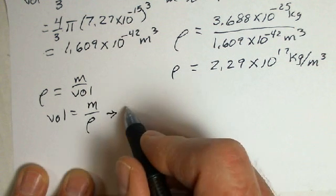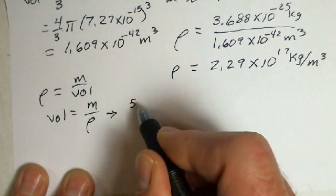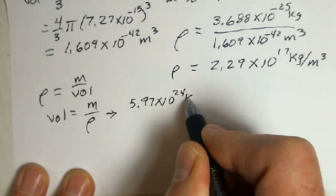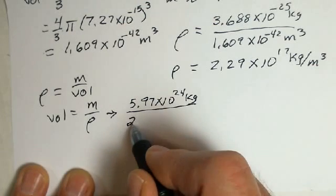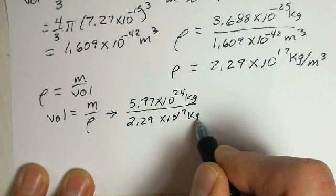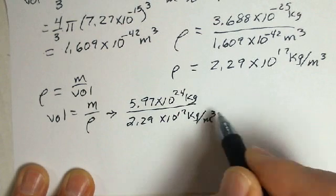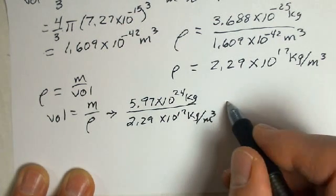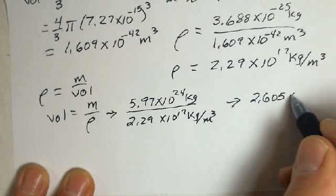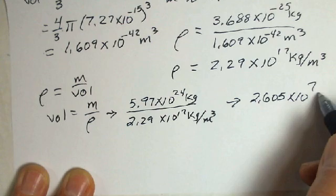And you can look up the mass of the Earth. 5.97, 10 to the 24th kilograms. And now let's use this density number. 2.29 times 10 to the 17th kilograms per cubic meter. And we come up with a volume here, 2.605 times 10 to the 7th cubic meters.